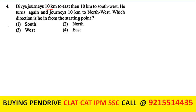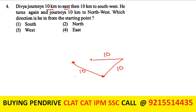Dibya journeys 10 km to the east, then 10 km towards south-west, then turns and journeys 10 km to the north-west. Since all distances are 10 km and the angles are symmetric, she ends up directly west of the starting point. The answer is the third option: from the starting point, her direction is west.